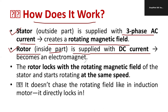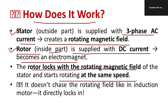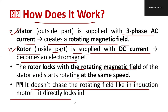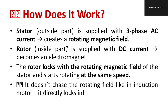By providing DC supply to the rotor, it becomes an electromagnet. The rotor then locks with respect to the rotating magnetic field — the speed of the rotor and the rotating magnetic field become equal. Unlike the induction motor which always chases the rotating field, in the synchronous motor locking occurs directly. This locking of speeds is a major peculiarity of the synchronous motor and a common interview and lab viva question.